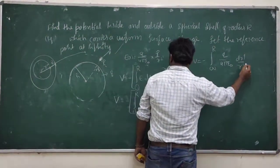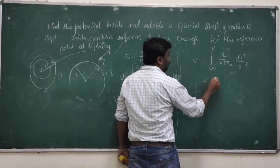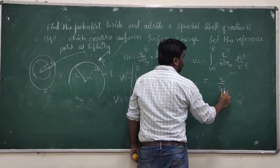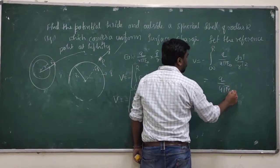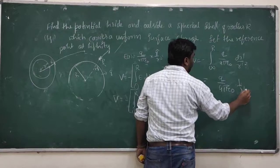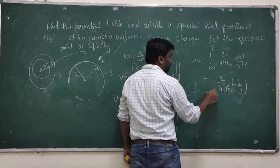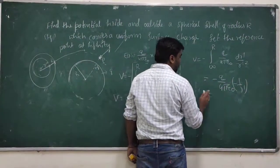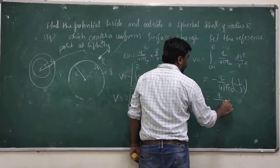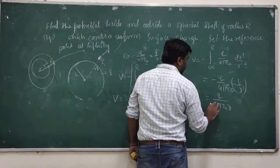So V is equal to minus of, with our reference point at infinity, the integral from infinity to R of q divided by 4 pi epsilon r, times dr-dash divided by r-dash squared. After integrating this we will get q divided by 4 pi epsilon r, into 1 over r-dash.